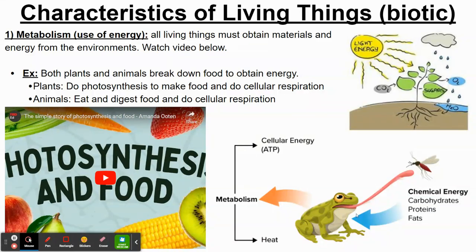An animal consumes food, digests it to get energy-rich molecules like sugars or carbohydrates, and then breaks those molecules down to release energy it can use to survive. Plants do the same through photosynthesis. We'll see more details on this later on.